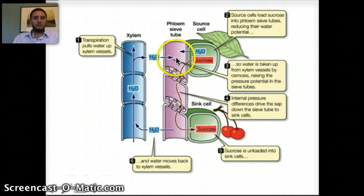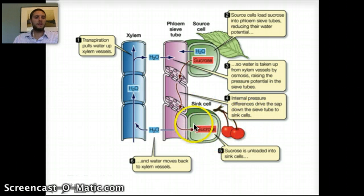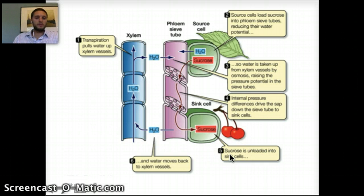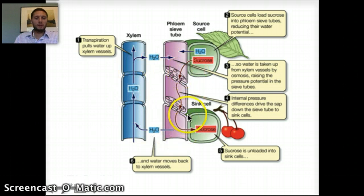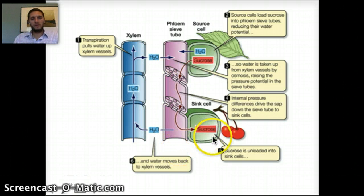Water is taken up by the xylem by osmosis, raising the pressure potential in the tubes. The internal pressure differences drive the sap down the tube to a sink cell, where the sucrose gets unloaded and delivered — assisted by a companion cell. Sucrose gets stored in these sink cells, which can be roots, fruits, or developing seeds. The water from the sap is then released back into the xylem to be reused, forming a recycling cycle. So the leaves produce glucose, which is converted to sucrose and moved down to sink cells for storage.